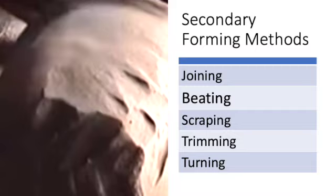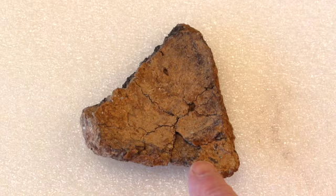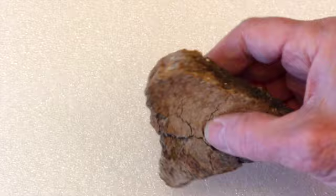Using beating to thin the walls of a coil or slab-built vessel can leave flattened facets on the surface. It can also lead to spider-like cracks around big inclusions on the surface and a laminar structure that may cause flakes of the vessel wall to spall off.